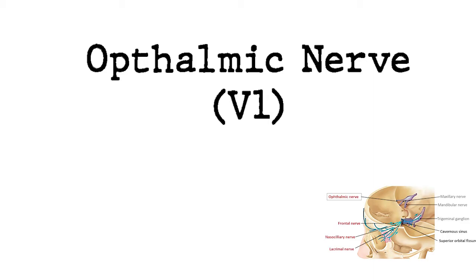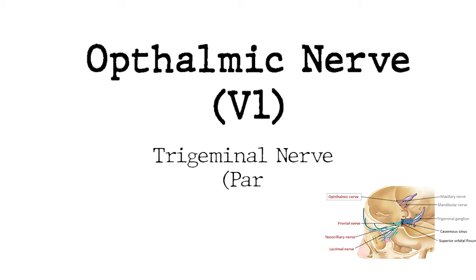Hello and welcome back everyone. Today in this lecture I will be discussing V1, which is the ophthalmic nerve, a branch of the trigeminal nerve. The ophthalmic nerve is a pure sensory nerve; it provides sensory innervation to the skin and mucous membranes of the upper third of the face. This is part two of the trigeminal nerve series — part one covered the origin and divisions of the trigeminal nerve, while this part focuses on the ophthalmic division.